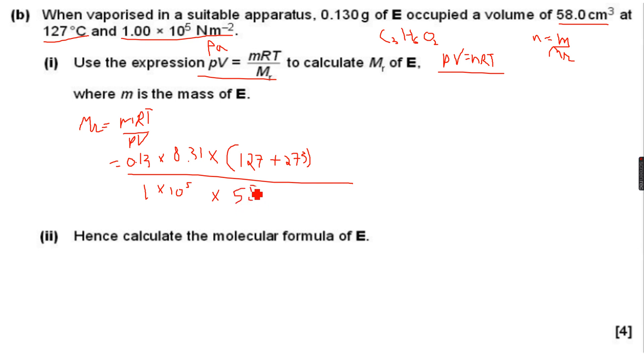Remember, V is always in meter cube and not in centimeter cube, so this will be 58 divided by 100 times 100 times 100. That's what we do to convert centimeter to meter - we divide by hundred. Because it is cubed, we will have to divide it by 100 cubed.